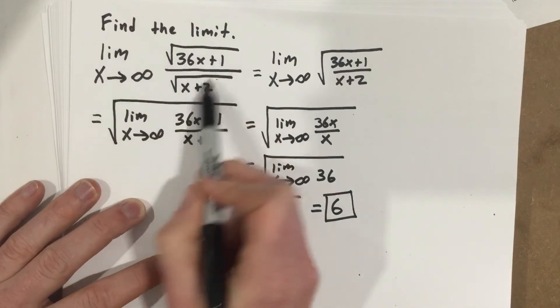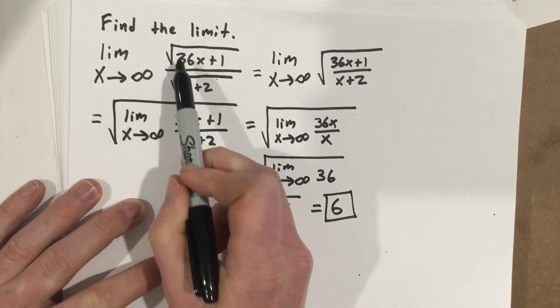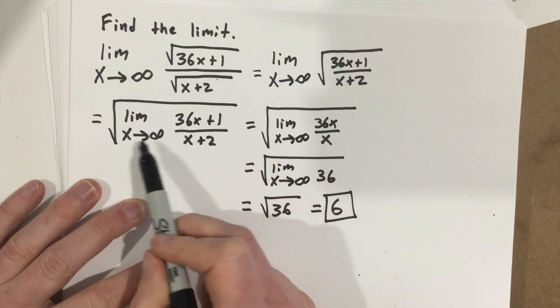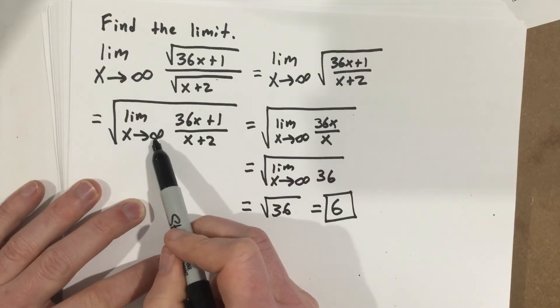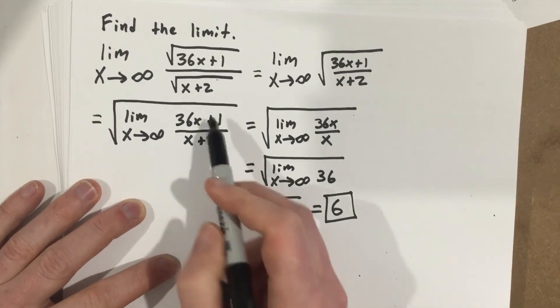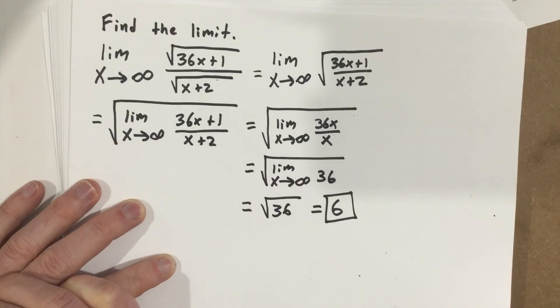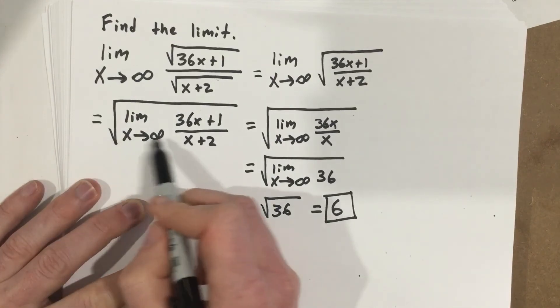So our limit of this function, without using L'Hopital's rule, is 6, and we get there because we use some exponent laws, and then we recognize that when taking the limit as x approaches infinity, the ending terms, or the terms that are smaller than the largest power, those terms are insignificant as x approaches infinity.